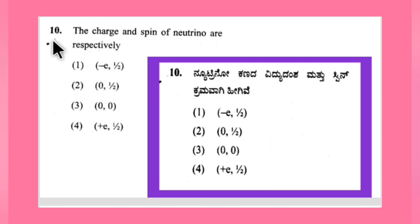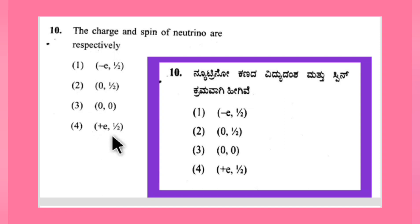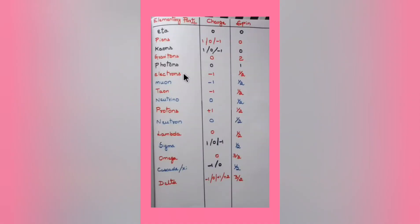Moving to question number 10: the charge and spin of a neutrino are respectively what? This comes from the elementary particle concept. Though elementary particles may not be in the upcoming exam syllabus — it was in the previous 2012 paper but not in 2015 — let us check the list of elementary particles with their charge and spin values.